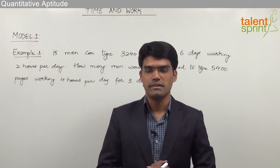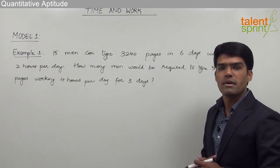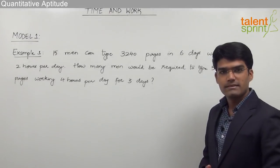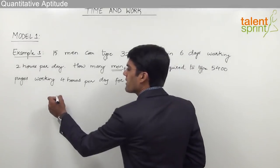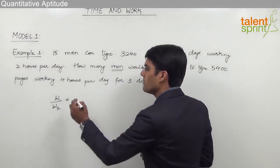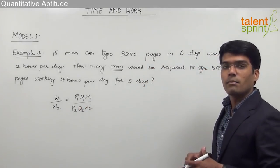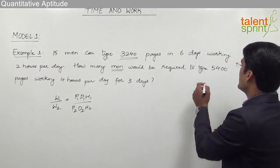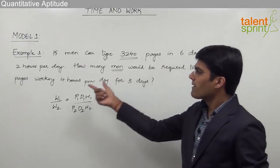Let us discuss the first example based on model 1. The question is: 15 men can type 3240 pages in 6 days working 2 hours per day. How many men would be required to type 5400 pages working 4 hours per day for 3 days? Here, W1 = 3240 pages, W2 = 5400 pages, P1 = 15, D1 = 6, H1 = 2.